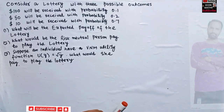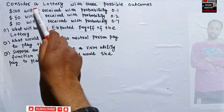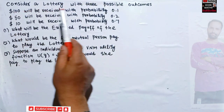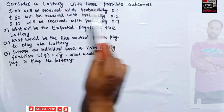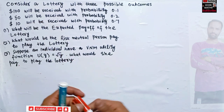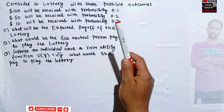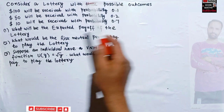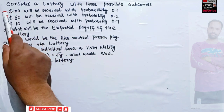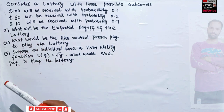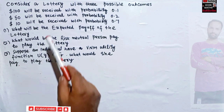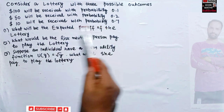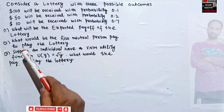This question is related to choice under uncertainty. Consider a lottery with three possible outcomes: $100 will be received with probability 0.1, $50 will be received with probability 0.2, and $10 will be received with probability 0.7. That means a 10% chance of winning $100, 20% chance of winning $50, and 70% chance of winning $10. We need to find the expected payoff of this lottery.